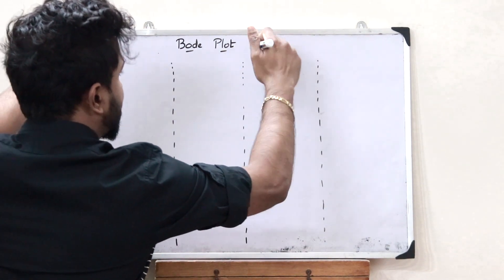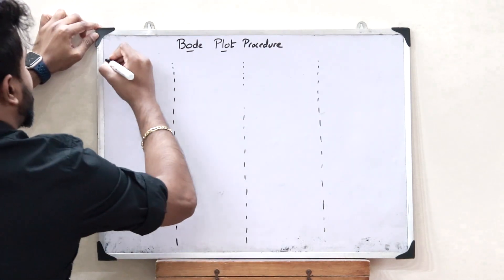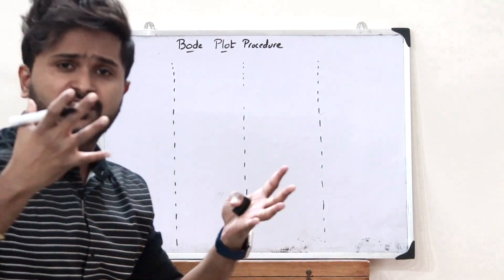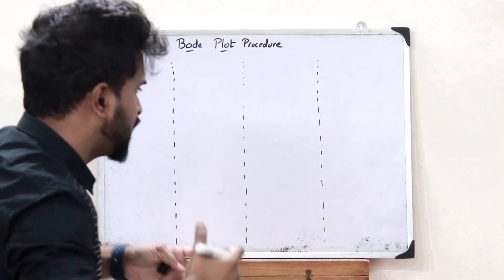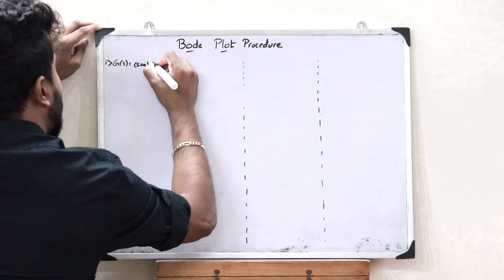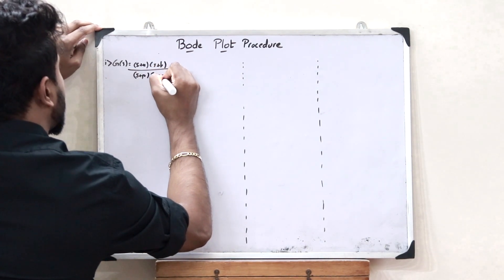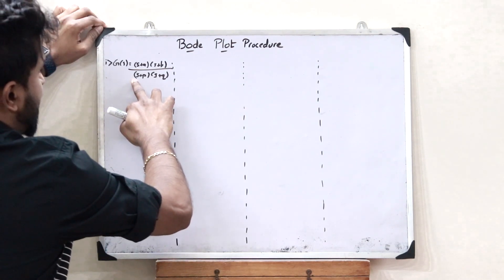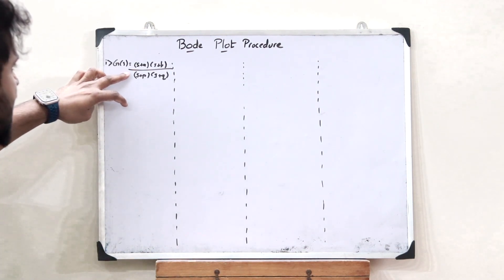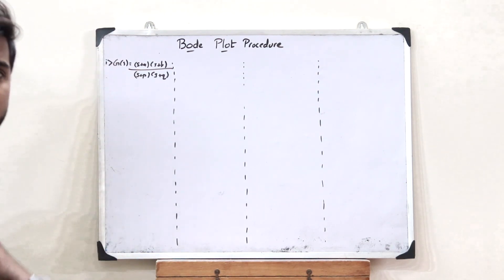Let us see the various procedures for plotting a Bode plot. Step number one: every control system is represented by a transfer function. Let us take a particular transfer function given as G(S) = (S + A)(S + B) / [(S + P)(S + Q)]. When we obtain a transfer function like this, what we have to do is convert it into a standard form.